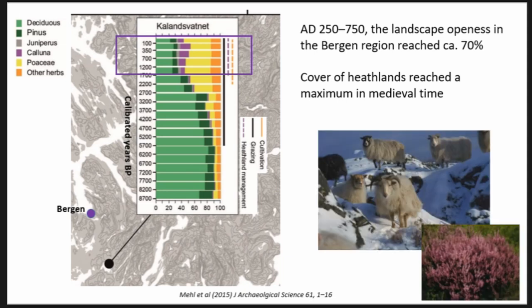Heather was very important along the coast. The heath landscapes were used for whole-year grazing, and that meant that people could have more grazing animals. We think the increase we see in the Viking Age may be connected to the need for wool for the sails on the Viking ships. Then when it comes to medieval time it probably also reflects the need for food — meat for the town and the increasing population which needed food.